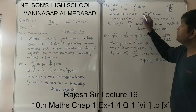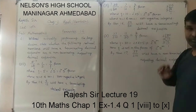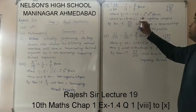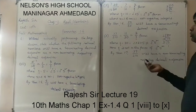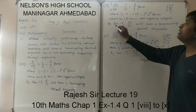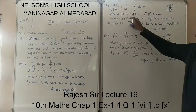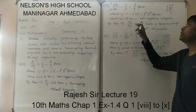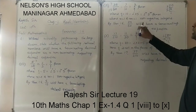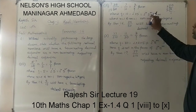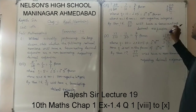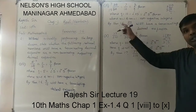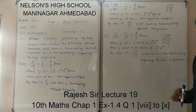So it is in the form 2 raised to n and 5 raised to m, where n equals 1 and m equals 1. Both 1 and 1 are non-negative integers. So again by Theorem 1.6, the given question 35 upon 50, because it is in the form 2 raised to n times 5 raised to m where n and m are non-negative integers, will have a terminating decimal expansion.